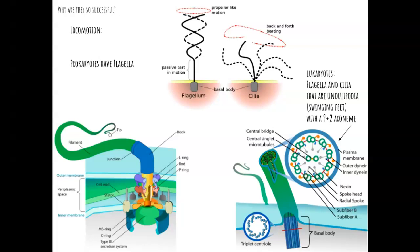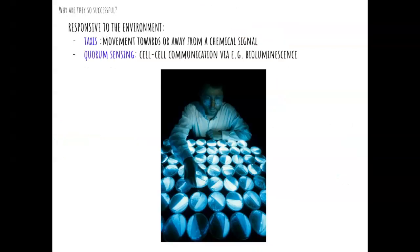Eukaryotes can also have flagella, but they also can have cilia — these are pseudopodia, which we also call swinging feet. The difference is that eukaryotes have a 9-plus-2 axoneme structure centered around centrioles. Prokaryotes have two basic types of movement. The first is called taxis, which is movement toward or away from a chemical signal. The other is called quorum sensing — this involves cell-cell communication, like when certain bacteria use bioluminescence and communicate with surrounding cells to make bioluminescence occur in all of the bacteria simultaneously.